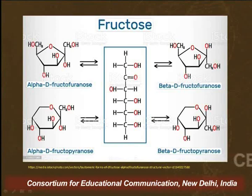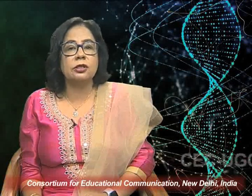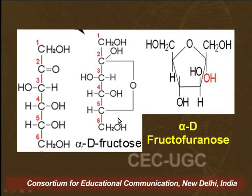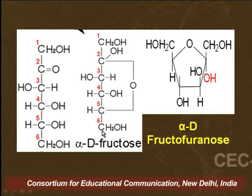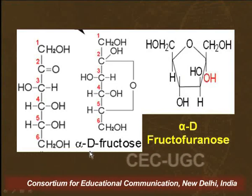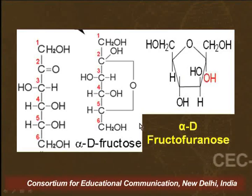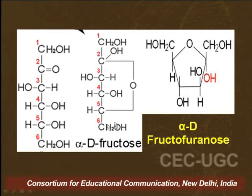Now let us see how this reaction takes place. We can represent fructose in so many structures: the open chain structure and the ring structure. The ring structure clearly shows that when the ring is being formed, the reaction is taking place between the OH on the fifth carbon and the ketonic group on the second carbon, resulting in a five-membered ring. We can represent this structure by a Haworth projection, and this is the actual representation of the fructose molecule.